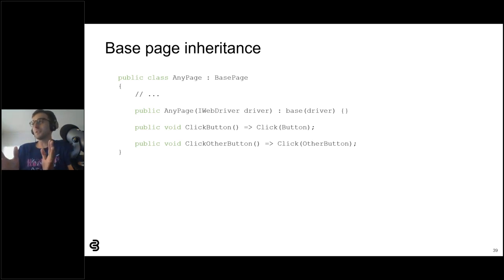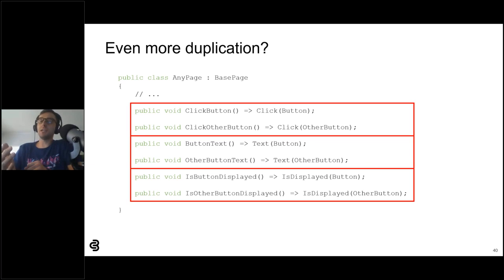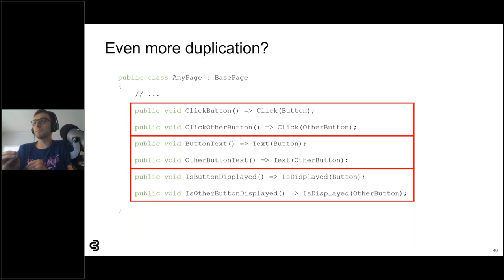I've seen many teams stop here and say, 'This is good enough.' Unfortunately, in my opinion, this really isn't all that great. The base page helps mitigate code duplication, but it doesn't solve its root cause. Page objects inherently combine two separate concerns: page structure and interaction. Interactions are often generic enough to be used on any web elements, but coupling interaction code with specific locators forces testers to add new page object methods for every type of interaction needed. That's a lot of extra code that shouldn't be necessary.